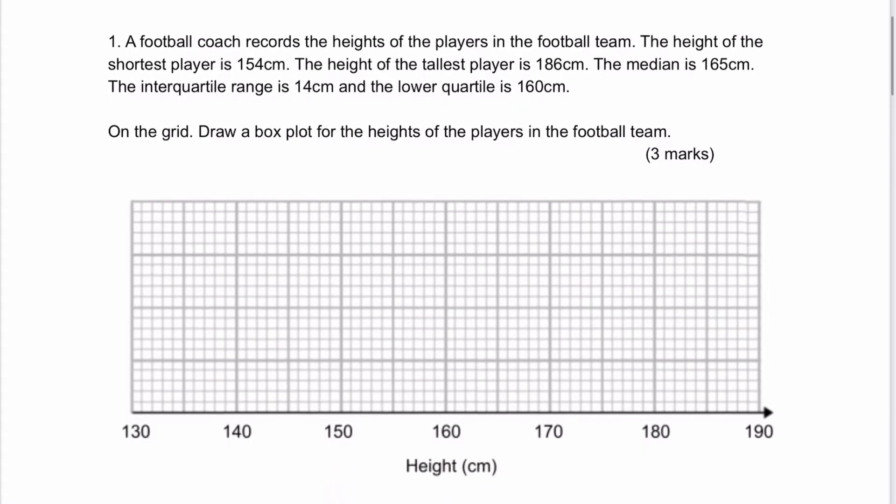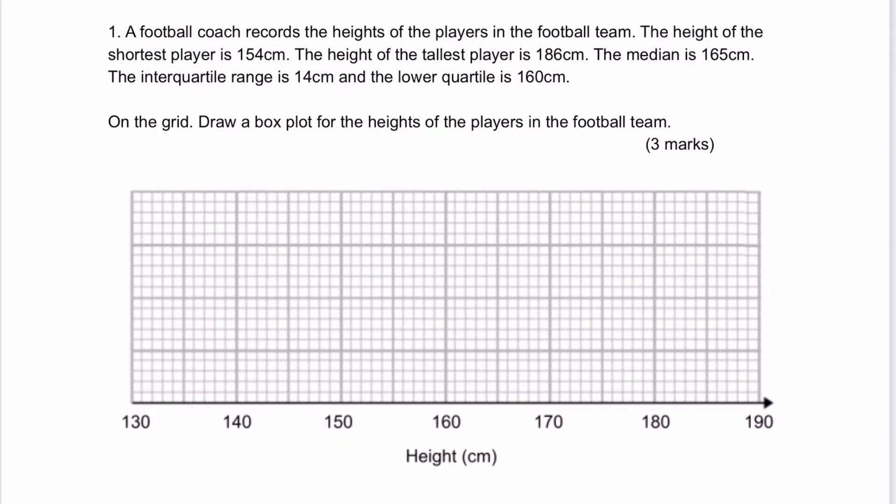So the first question is we're going to be drawing a box plot for the information that we've got available to us. You can see here it says the shortest player is going to be 1.54 metres and the tallest is 1.86. So the two extremes of the box plot, the range, is going to be 1.54 to 1.86. The next bit says the median is 165 centimetres.